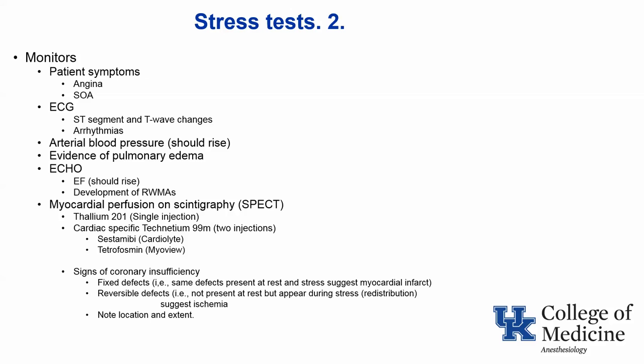There are several different monitors used to detect evidence of cardiac disease during stress, including patient symptoms, ECG changes, changes in arterial pressure, or evidence of pulmonary edema. Another method is by analyzing the transthoracic echo during exercise, looking for changes in ejection fraction or development of regional wall motion abnormalities. The ejection fraction should normally rise with exercise, whereas in the presence of ventricular dysfunction or ischemia, it may fall.